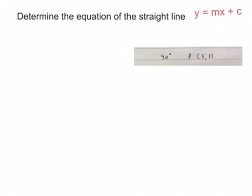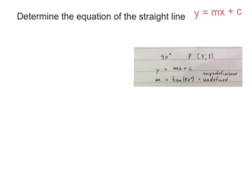The last one they tell us the inclination is 90 degrees and the point is (5,3) again. The formula is y equals mx plus c. I plug the 90 degrees into tan 90 degrees. Then on the calculator it will give me an error. That means it's undefined.